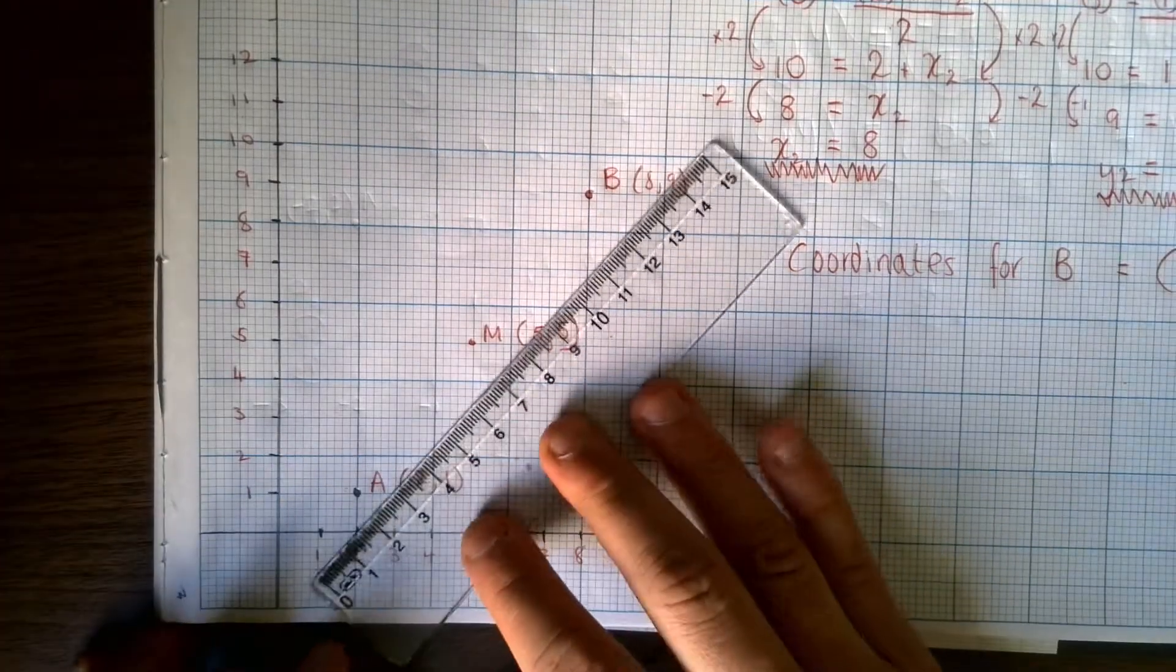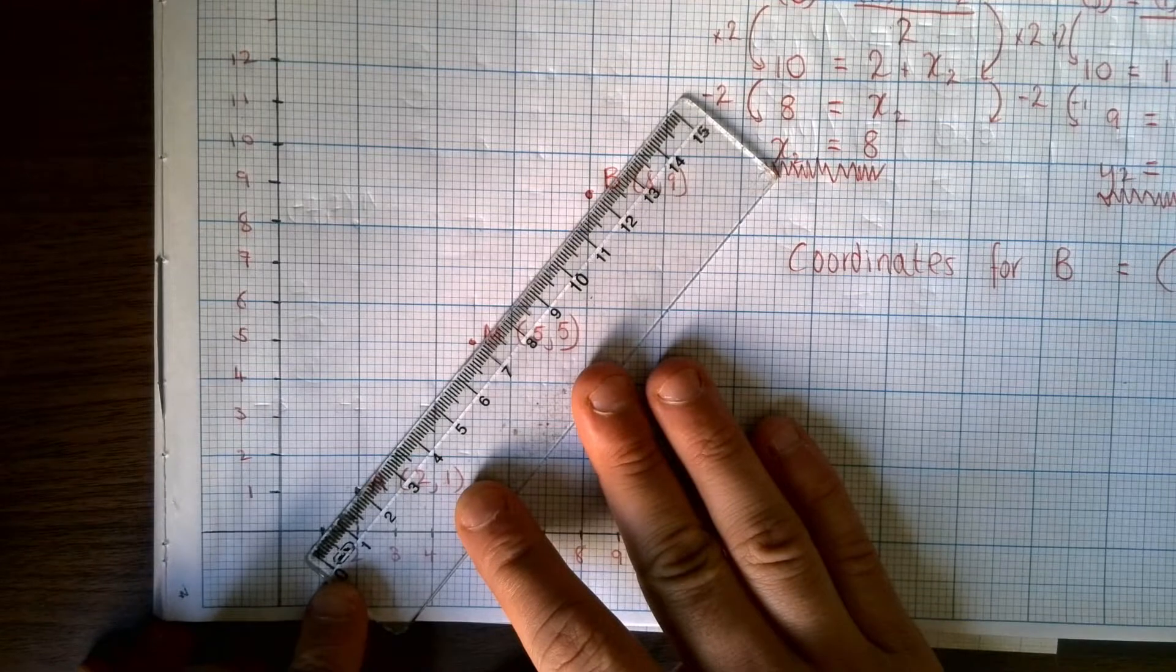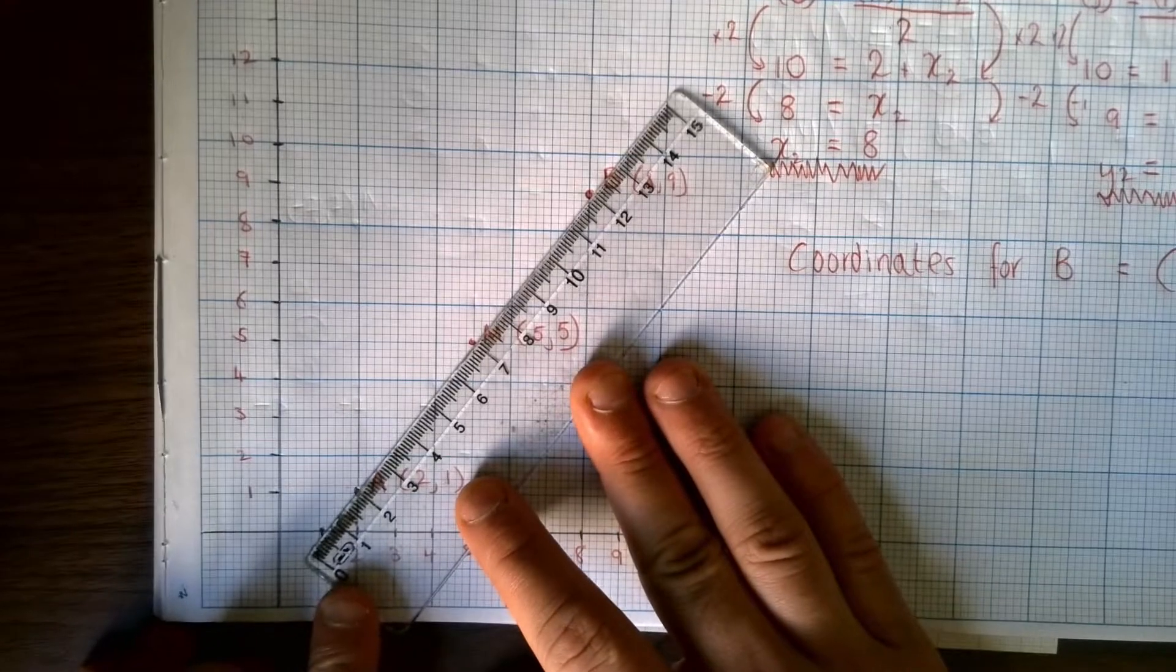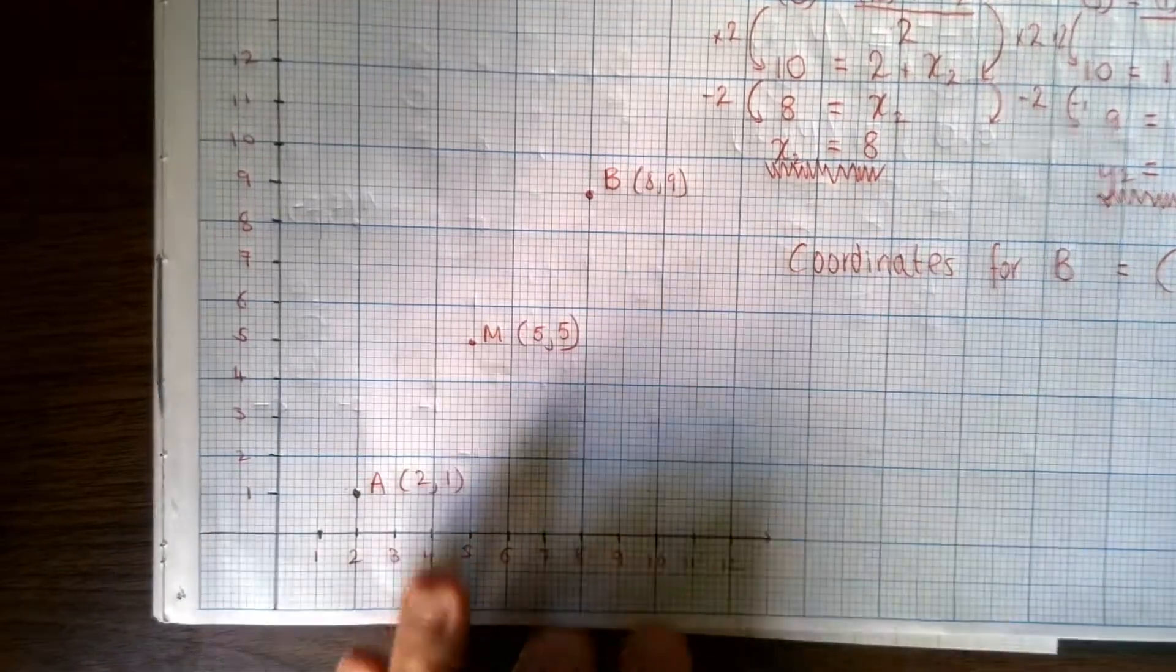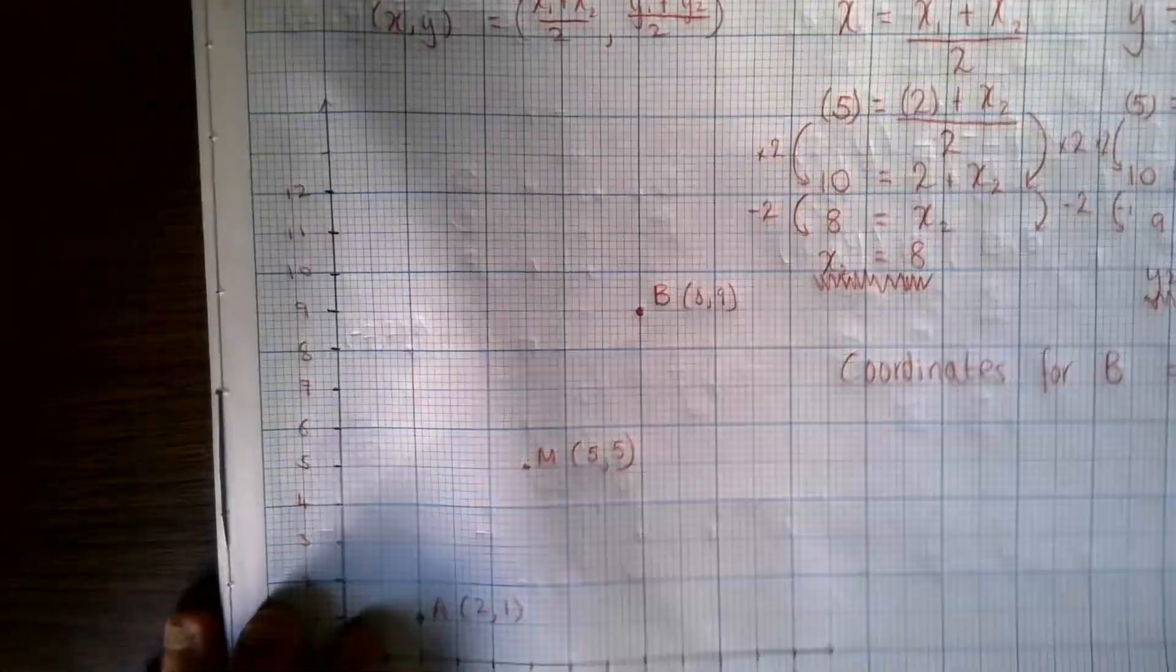Now, if this works, we should be able to just check it by connecting those dots. If you've got it out, then they won't connect in a line. So there we go. We've solved the first one. Now, we're going to...